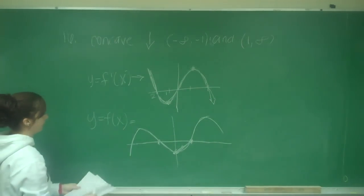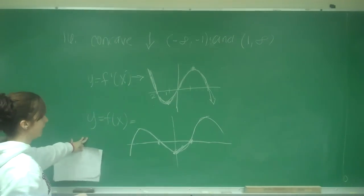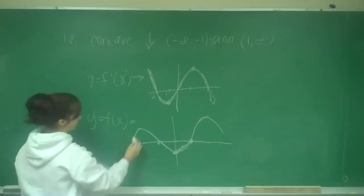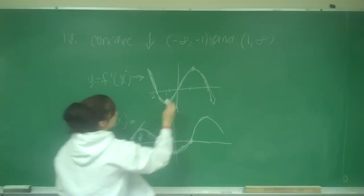To do that, I'm going to look at the graph of my position function. From negative infinity to negative 1 is over here, and because it's going down here, this is concave down. So that part's true.